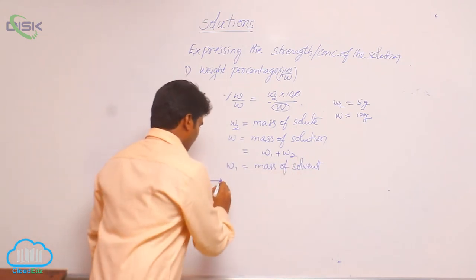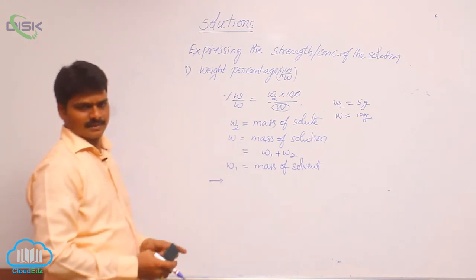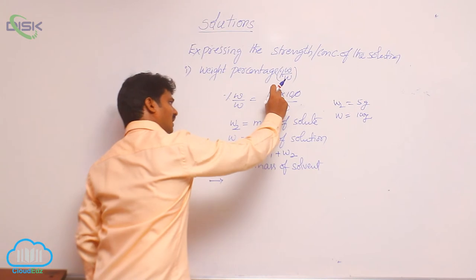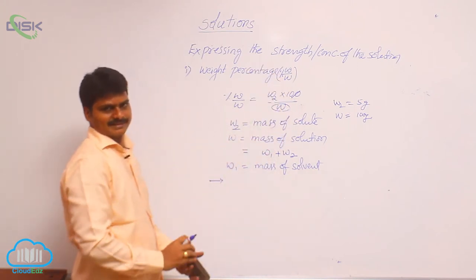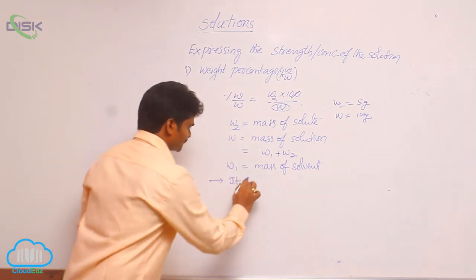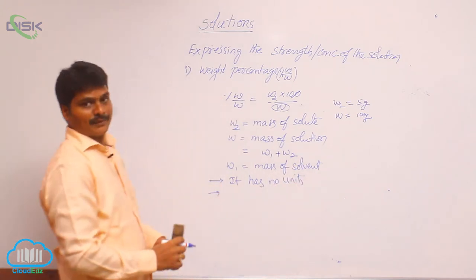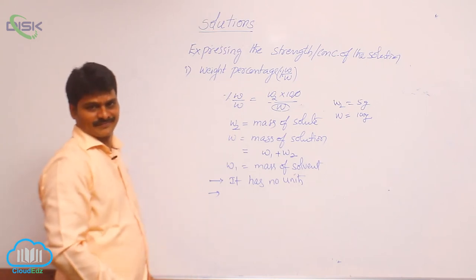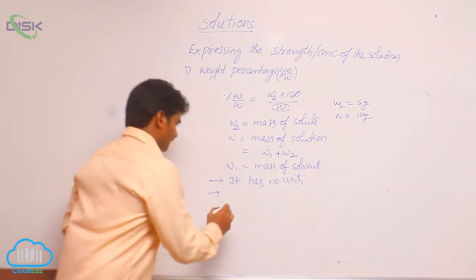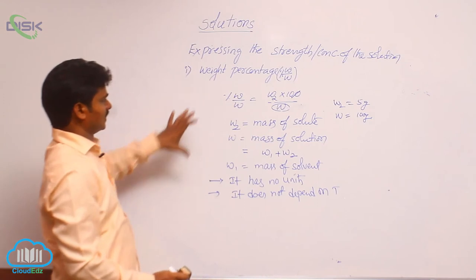W1 is the mass of solvent. What are the units of weight percentage? We derive units from the formula itself. In this formula, both numerator and denominator terms are weights — that means masses. So it is mass by mass, gram by gram, which cancels out. Therefore it has no units. Regarding the effect of temperature: temperature influences volume, not weight. There is no volume term in this formula, which is why temperature does not influence weight percentage. It does not depend on temperature.